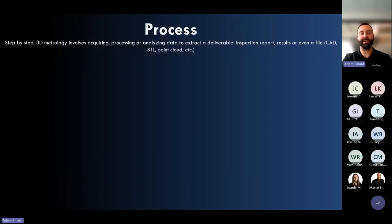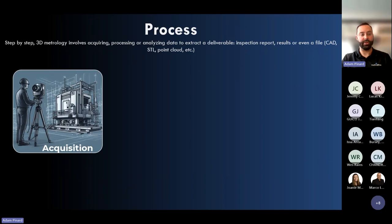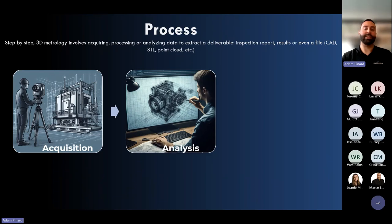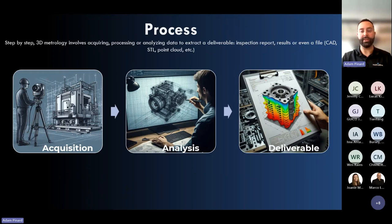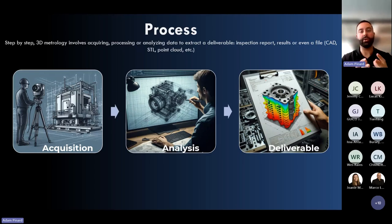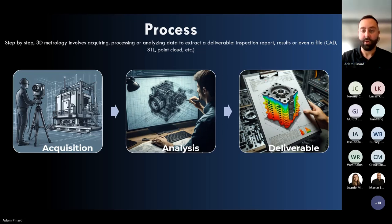The process is step by step: first the acquisition — the action of taking measurements and capturing the 3D model — then the analysis, where we post-process the acquired data, and finally we end with a deliverable. It can be a CAD file such as SolidWorks, an STL file — which is the file extension for a mesh or point cloud — a point cloud, or it can simply be a dimensional report or analysis for a customer.